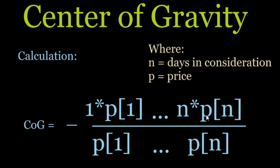So it's 10 times price number 10, with 10 meaning 10 days ago, not yesterday. Then you do that for 1 through 10, and divide by the sum of prices over that period. And don't forget the negation of the entire thing, so it actually works out the way that we want it to.